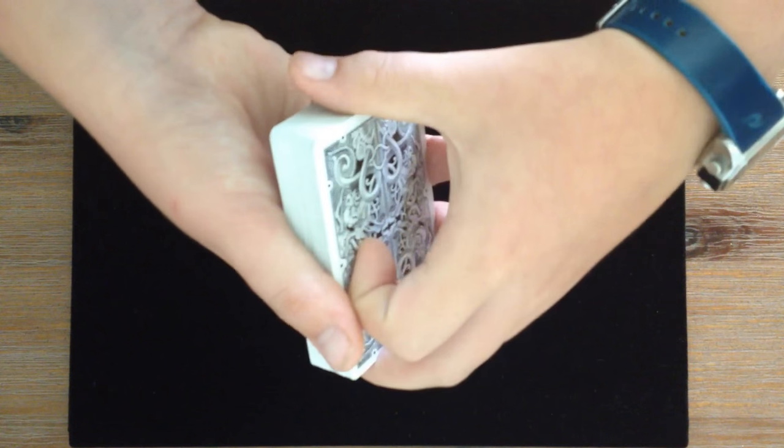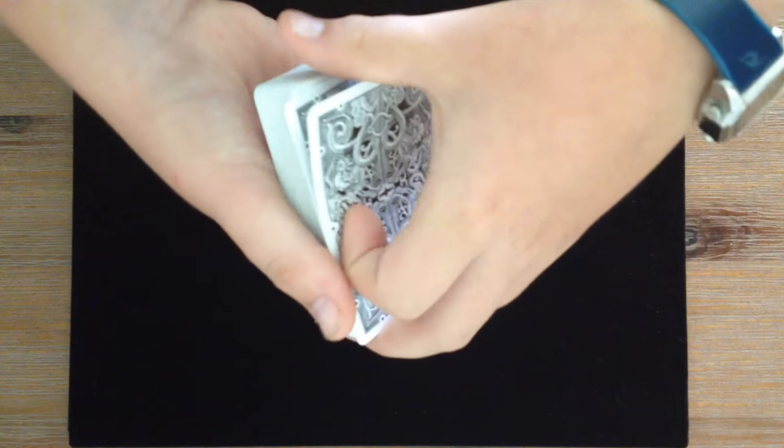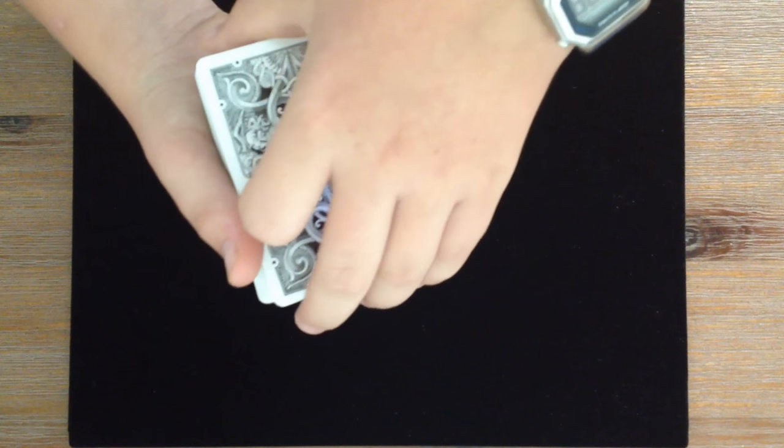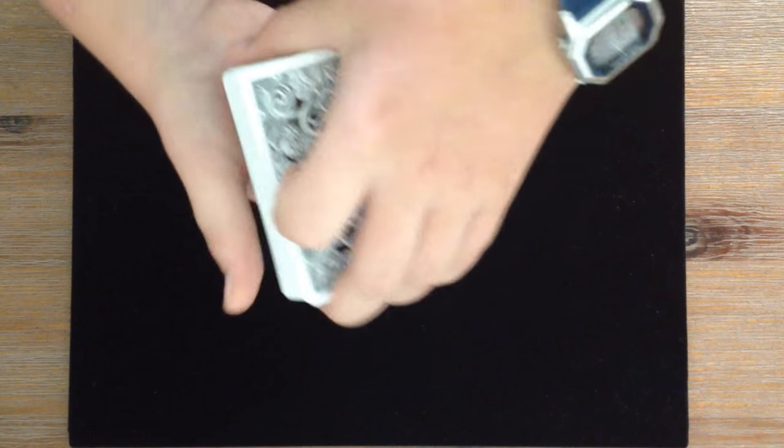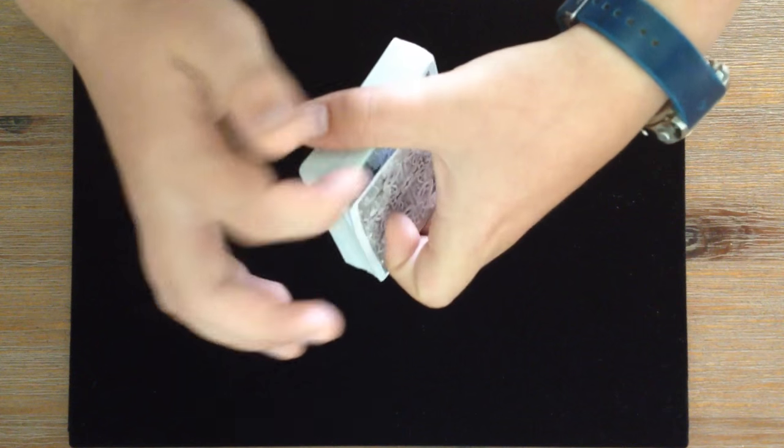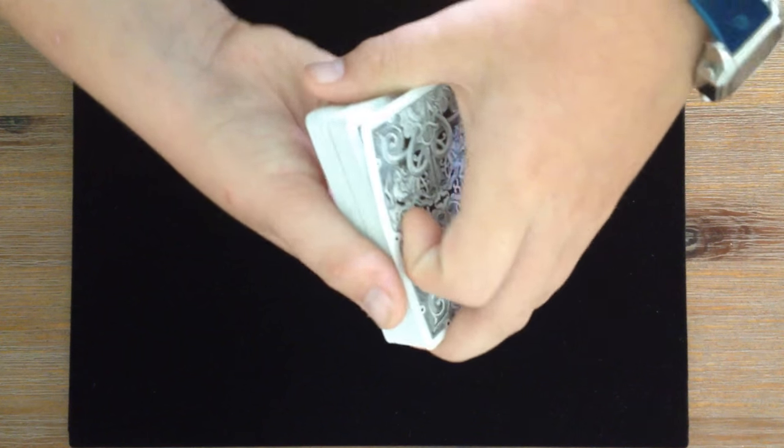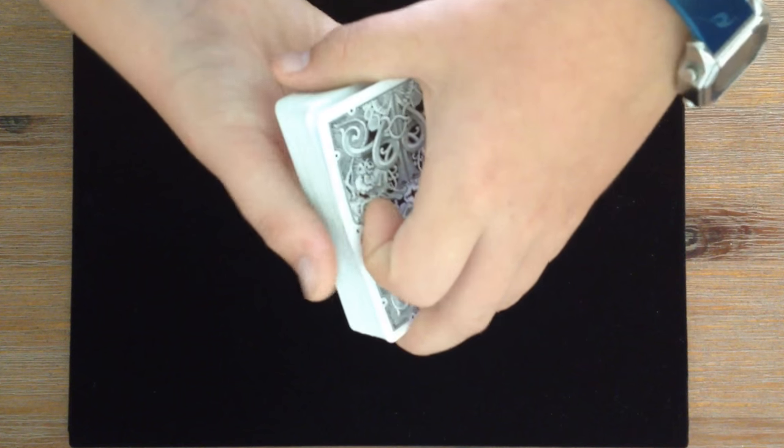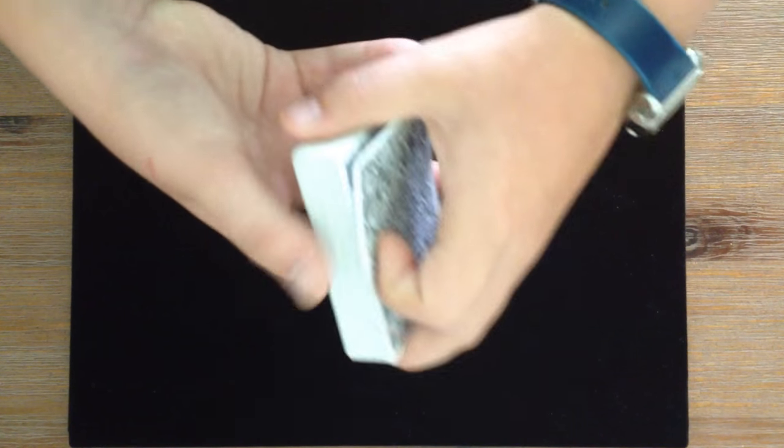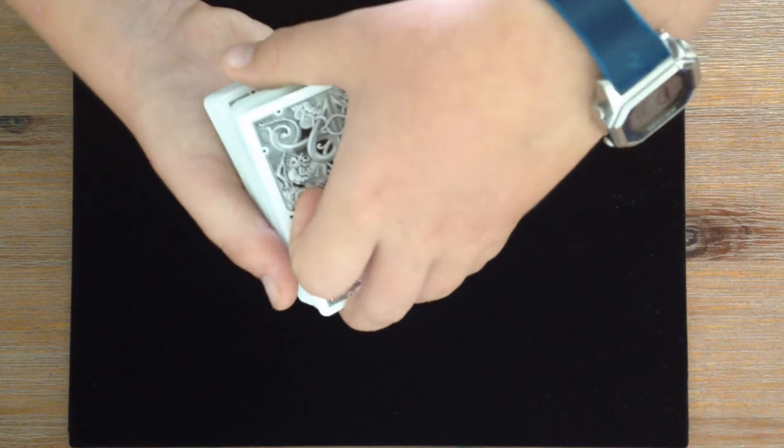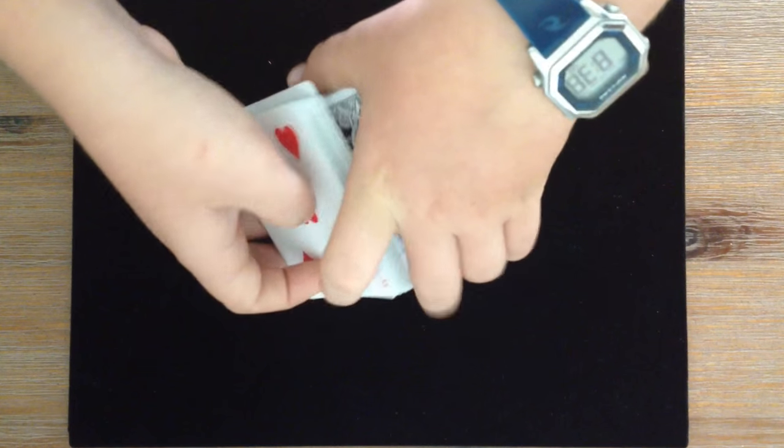Now what you want to do is slowly just lift up the top card with your thumb. But from their view they can't see this. You just do that so you've got around about a break like that. And you take off half of these cards. This is called a rotary reversal.